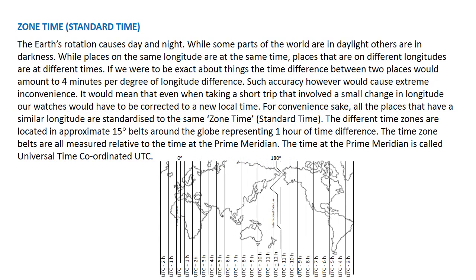This video considers time zones. The Earth's rotation causes day and night — while some parts of the world are in daylight, others are in darkness. Places on the same longitude are at the same time. Time zones endeavour to standardise places on a similar longitude to the same time. The different time zones are located in approximately 15-degree belts around the globe, representing one hour of time difference.